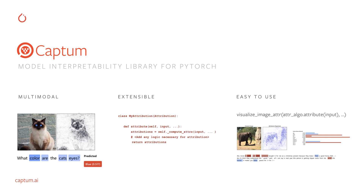The first focus area is that it is multimodal, meaning the library can be used for any type of models and features. Secondly, it is extensible, meaning you can extend it, add new features and algorithms. And thirdly, it is easy to use — you can use it with a couple of lines of code.